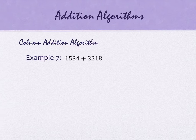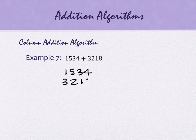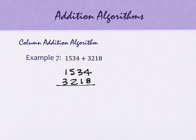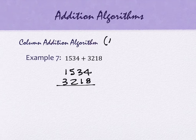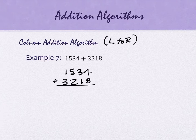Column addition — also called the left-to-right algorithm — works nicely when adding longer digit numbers. The whole point is that you work from left to right, which is more intuitive. So for a four-digit plus four-digit example, you start on the left-hand side. 1 plus 3 gives you 4 in the thousands place, meaning you really added 1,000 plus 3,000 to get 4,000.